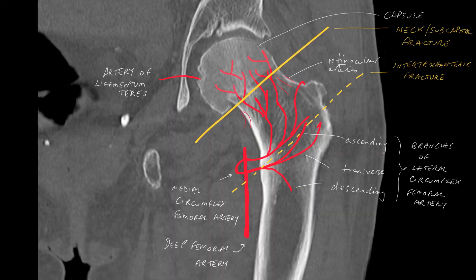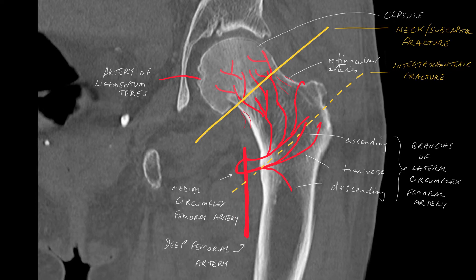There is an important vascular anatomy to be considered. The artery of the ligamentum teres — the blood flows in this direction and it supplies the capsule of the joint. The blood supply to the femoral head actually comes from the deep femoral artery, which gives rise to the medial and lateral circumflex arteries. The medial circumflex artery then gives rise to arteries that supply the neck and the femoral head,